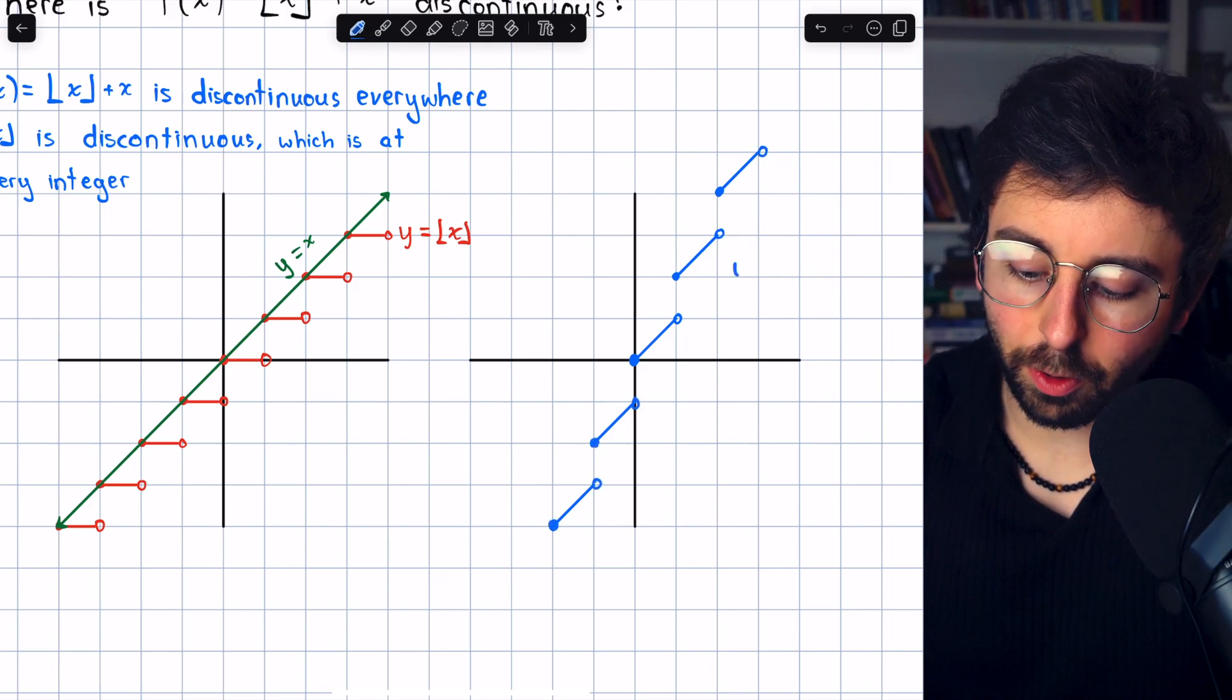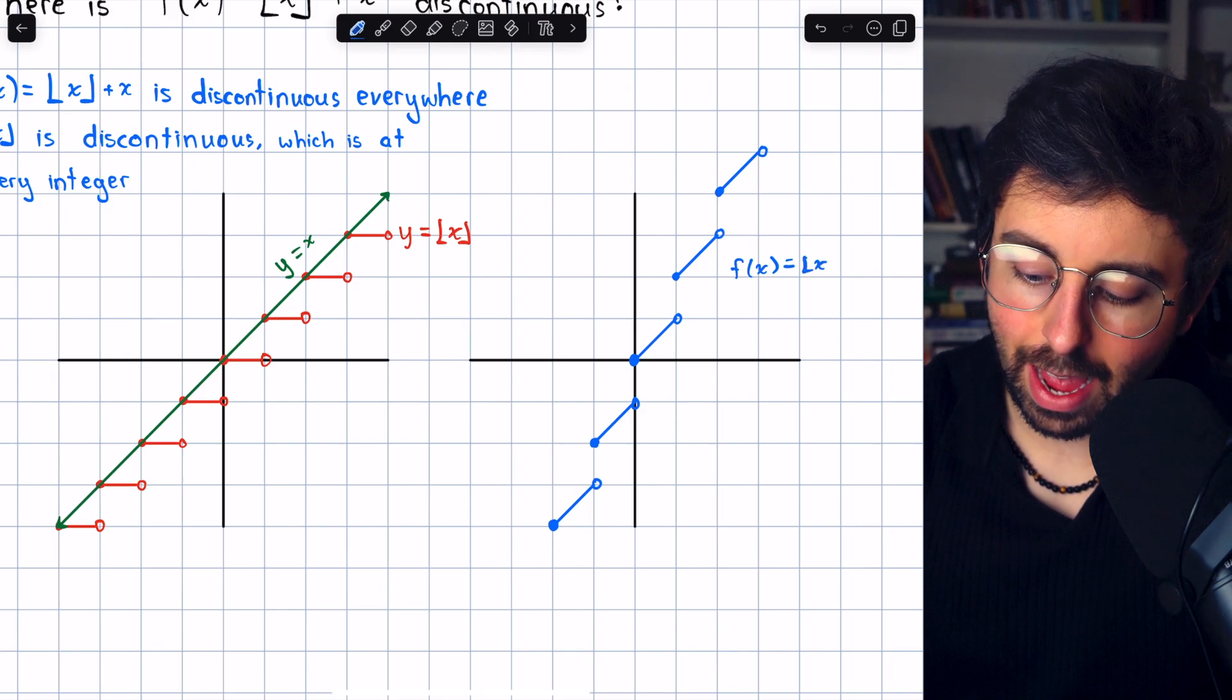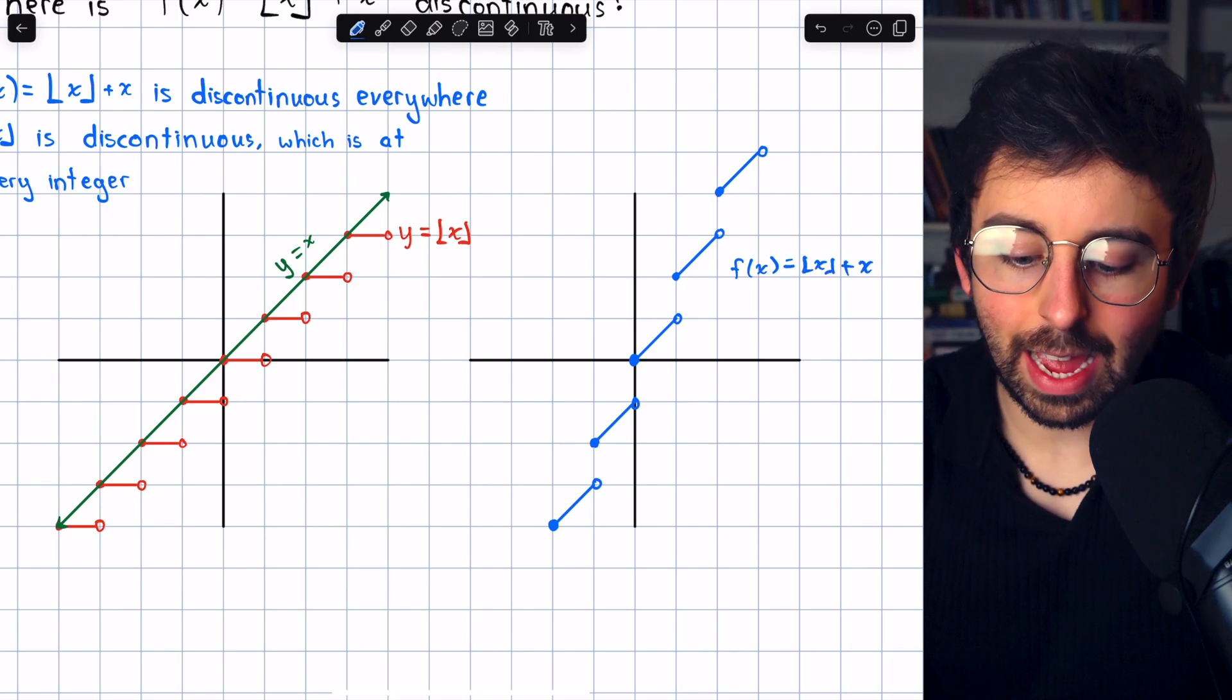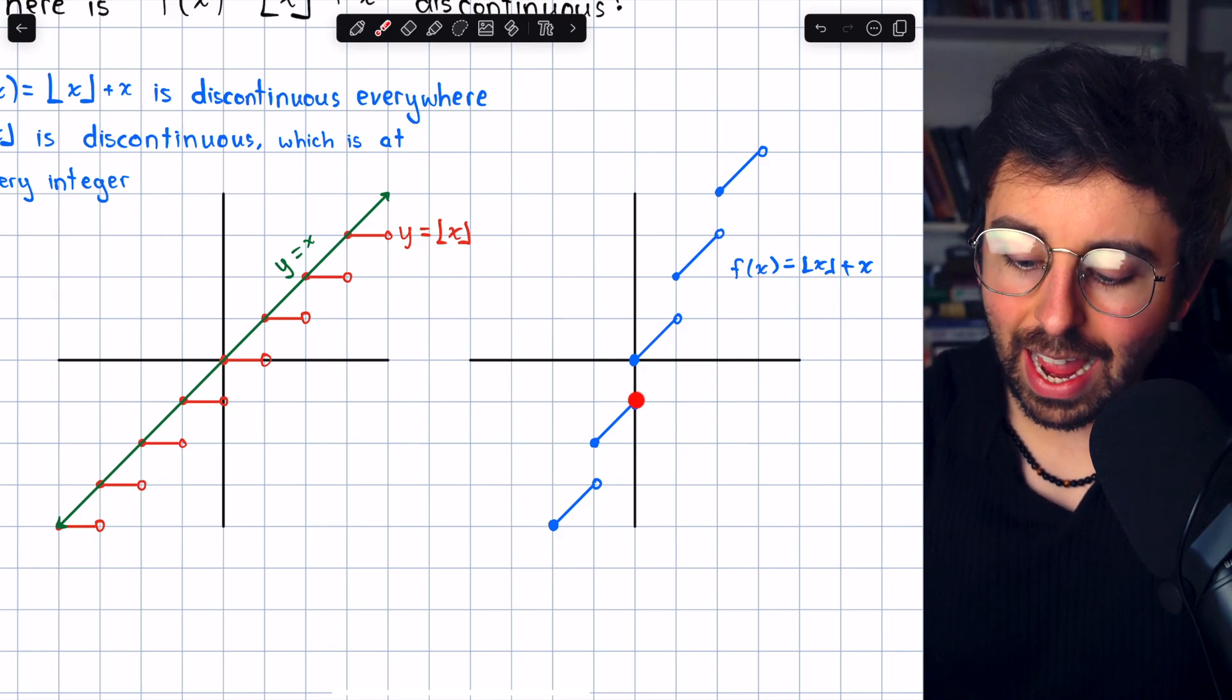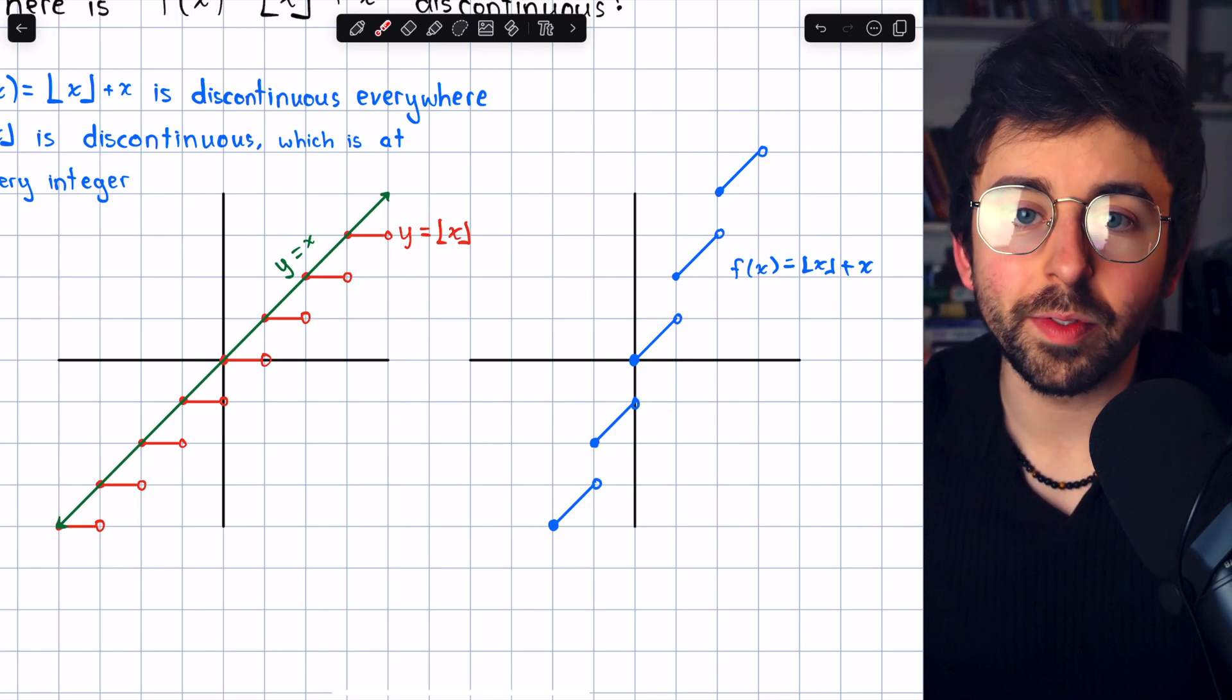So this is the graph of our function, the floor of x plus x. And of course, we can see how there are jump discontinuities at every integer value of x.